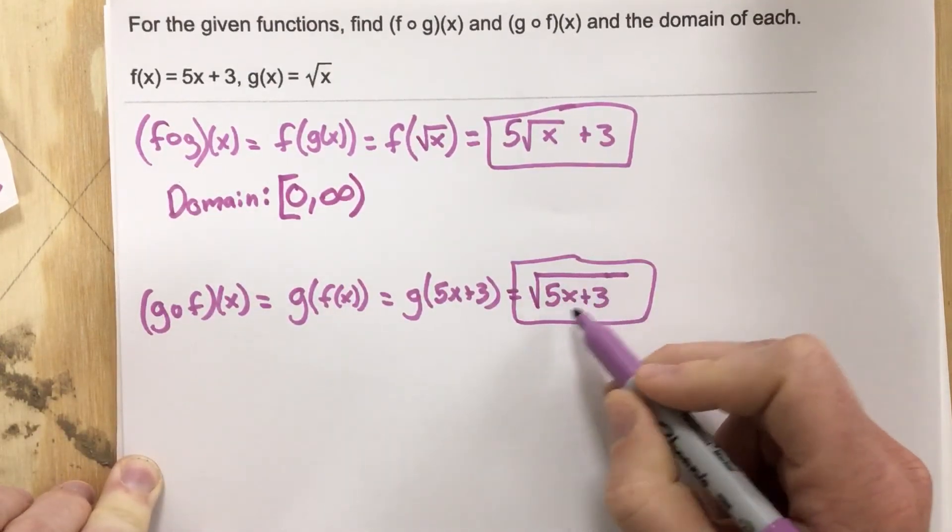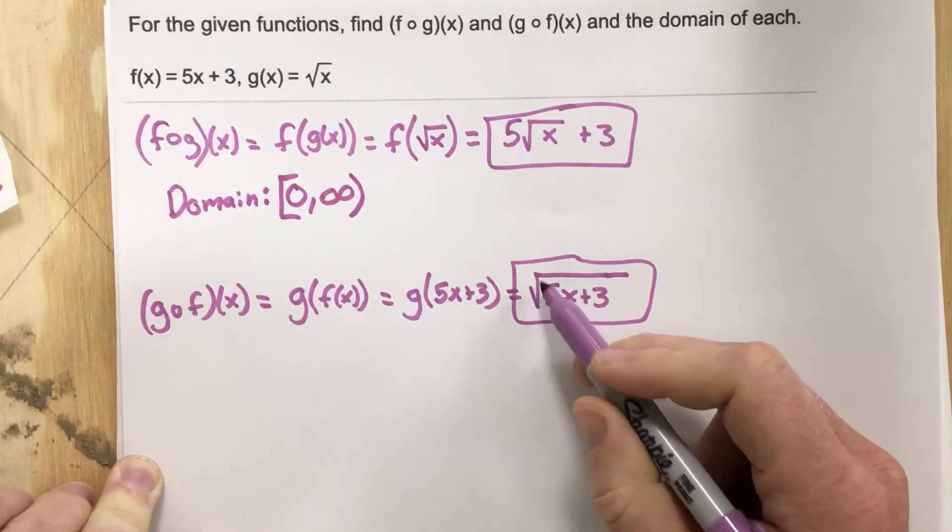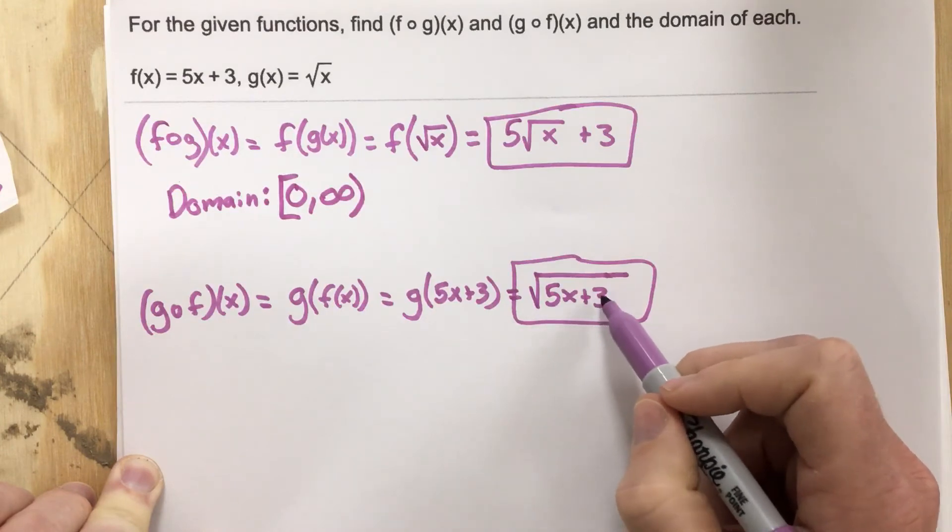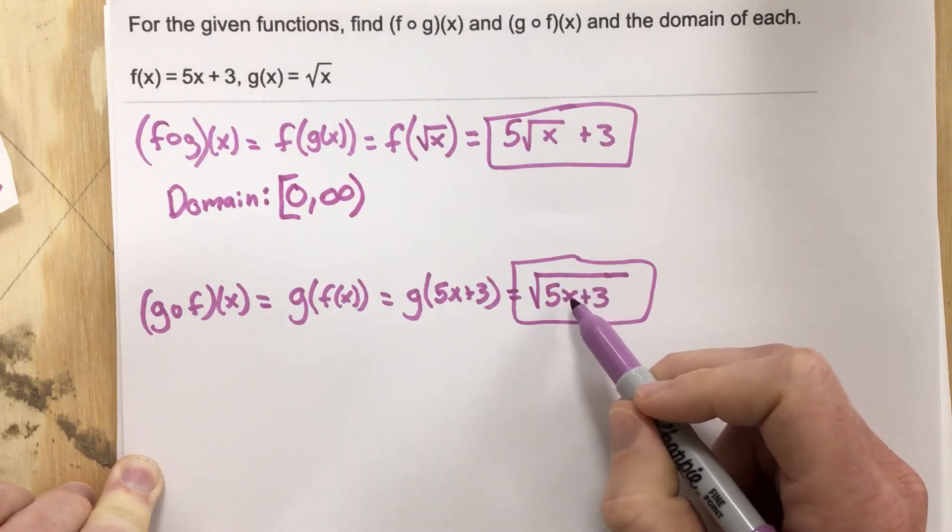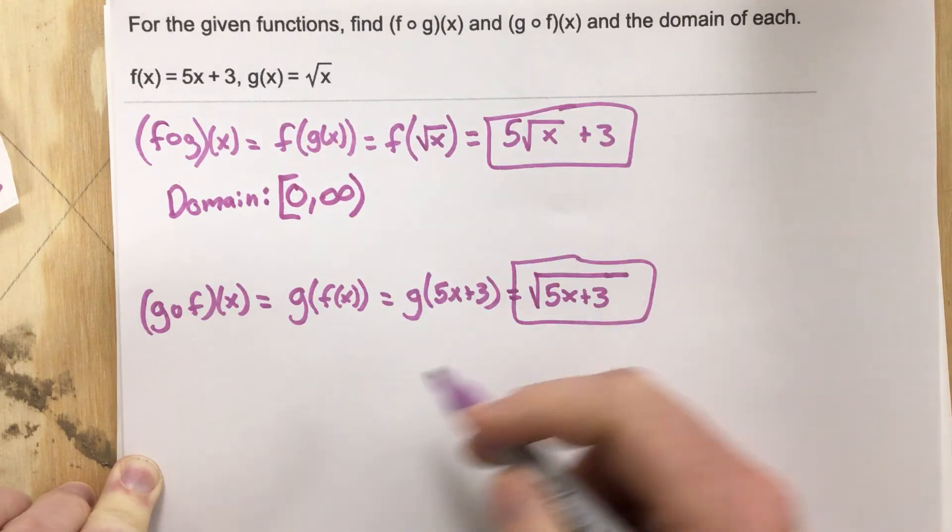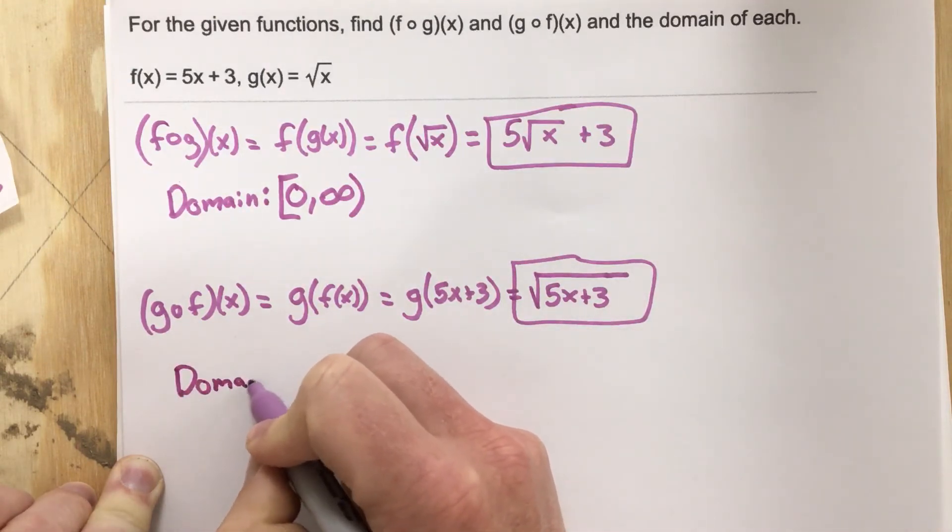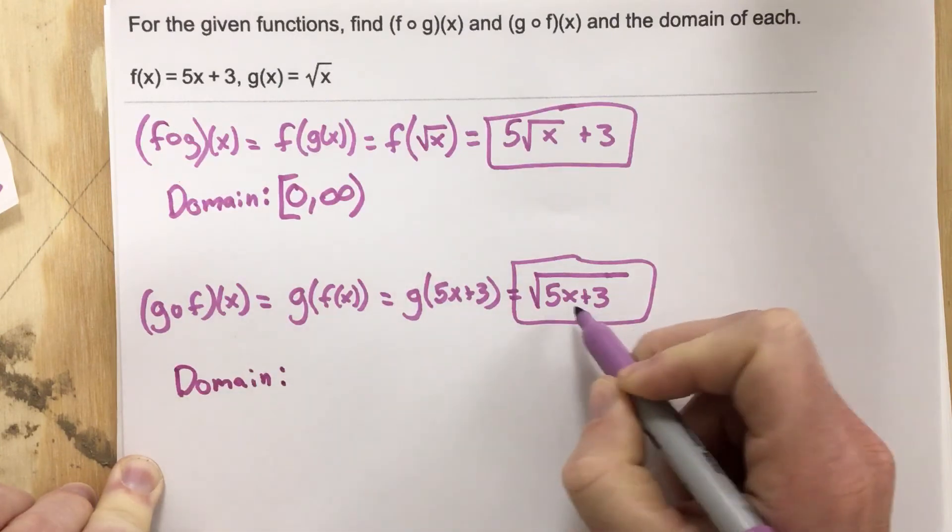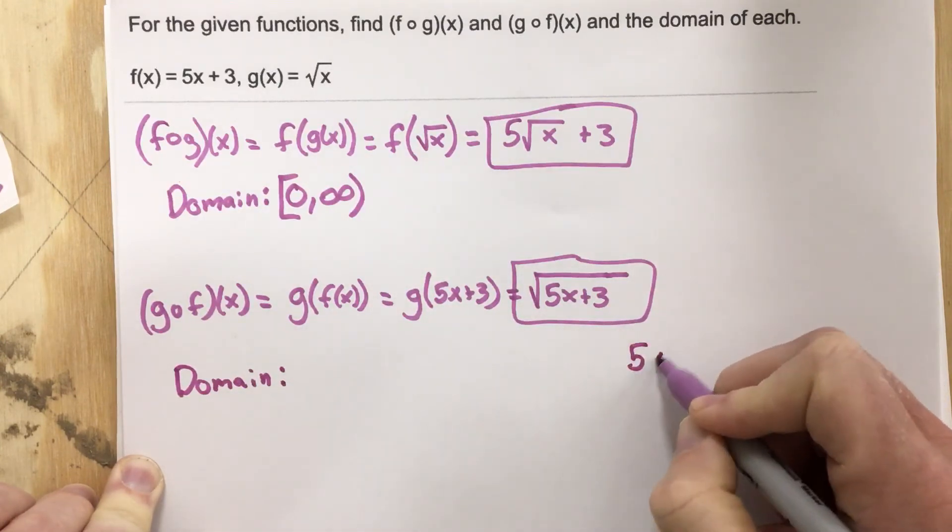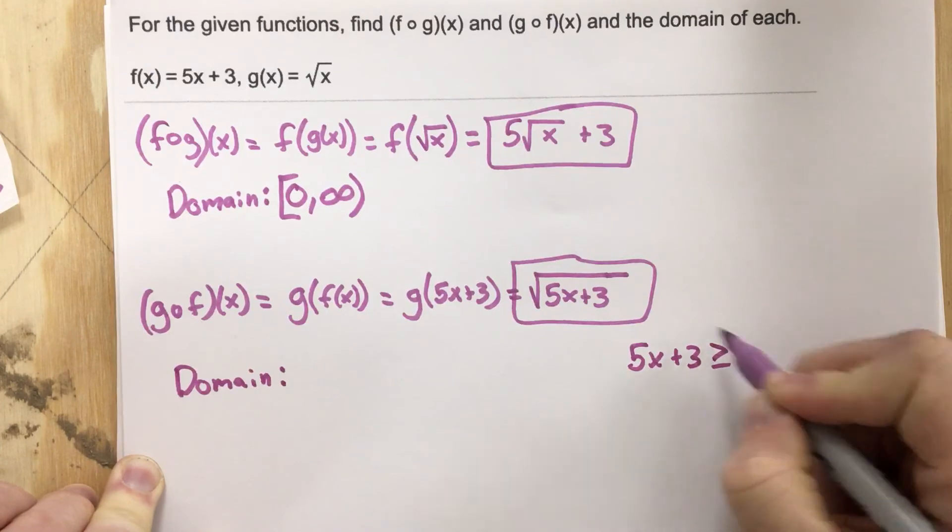For the bottom function, I have a radical as well. The difference is, inside the radical, I don't just have x, I have 5x plus 3. So now I have to take the inside and set it greater than or equal to 0.